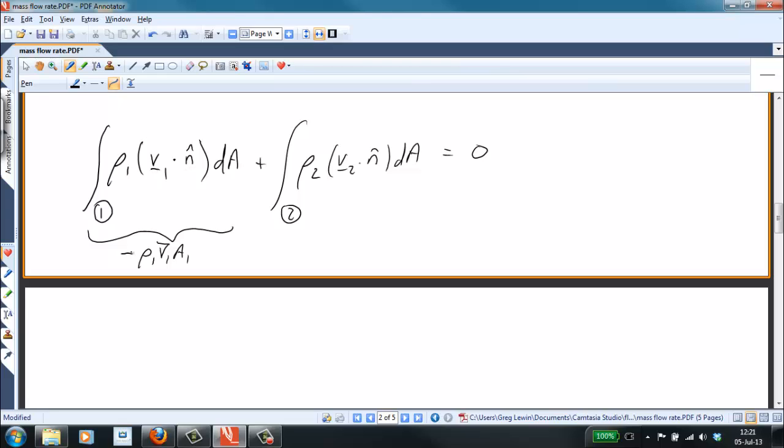And similarly for the second integral, we see that we're going to end up with rho two times the average velocity at two times the area at two, and this is going to be positive because the velocity is flowing outward. It's in the same direction as the outward pointing normal, and all of this is going to be equal to zero.